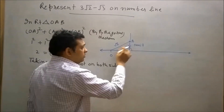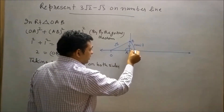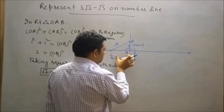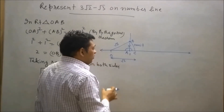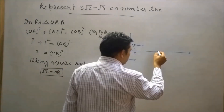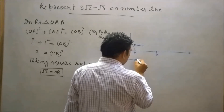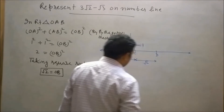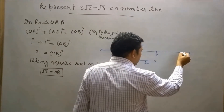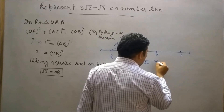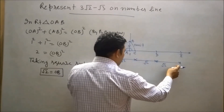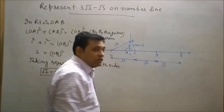Now draw an arc equal to OB from center O. This arc will intersect the number line at point C. Then draw an equal arc from center C; this arc will intersect the number line at point D, so CD is also √2. Continuing this process, OE equals √2 + √2 + √2, which equals 3√2.